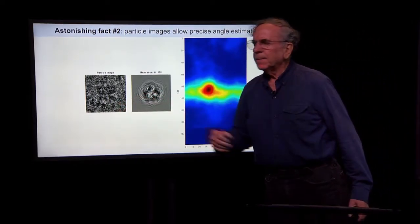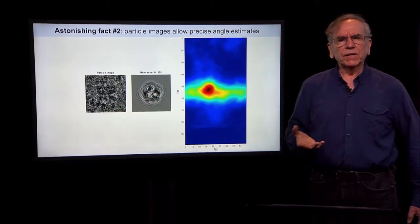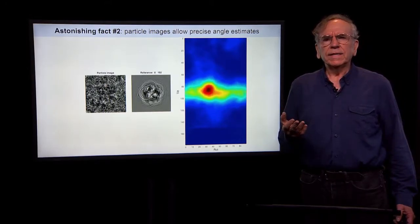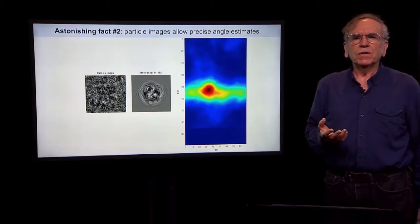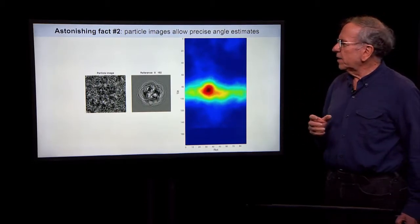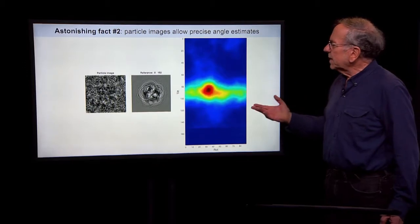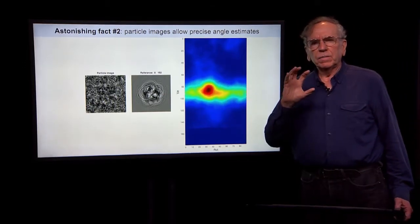And you can see that there is a pretty clear maximum of this probability. And to finish the calculation, you can see that this maximum is clear and it restricts the uncertainty of those angles to maybe one or two degrees.